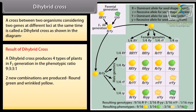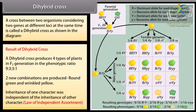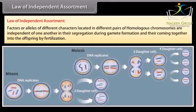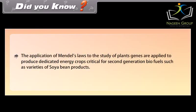Two new combinations are produced: round green and wrinkled yellow. The inheritance of one character was independent of the inheritance of the other — this is the Law of Independent Assortment. Factors or alleles of different characters located on different pairs of homologous chromosomes are independent in their segregation during gamete formation and their coming together in offspring by fertilization. Mendel's laws are also applied to produce dedicated energy crops critical for second-generation biofuels, such as varieties of soybean.